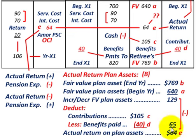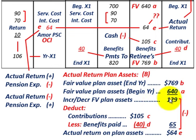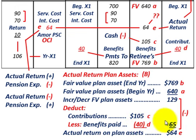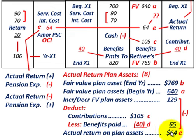That's how we calculate the actual return on our plan assets. You start with your fair values, determine end of year versus beginning of year, and identify any increases or decreases in the fair value of your plan assets. Then you deduct the contributions made to the pension plan less the benefits paid, and that difference is deducted from your increase or decrease in fair value to determine the actual return.